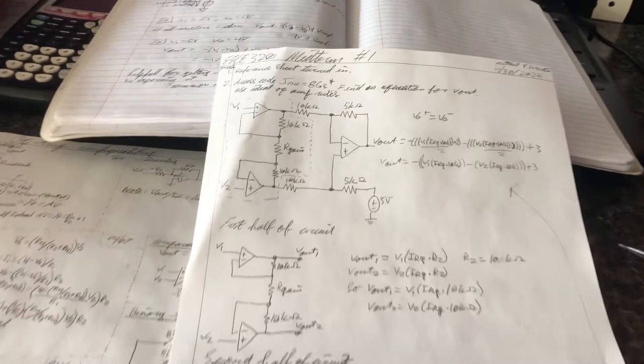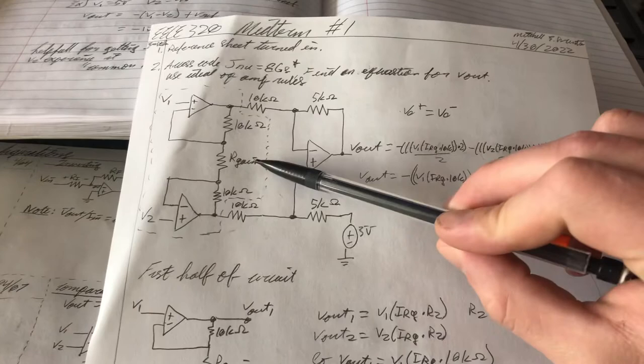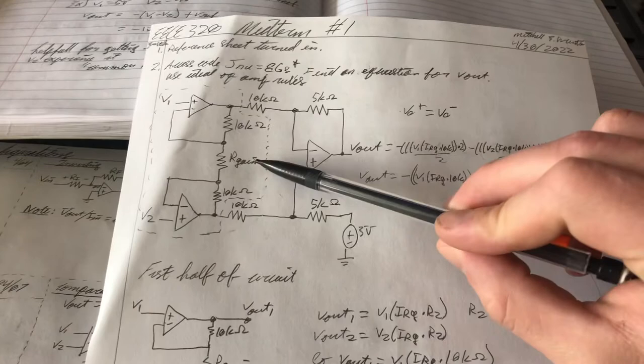I found that the Vout right here to this circuit is minus 1 times the quantity V1 times the current through our resistor here, our gain, times 10k, because these guys are going to share a current here.